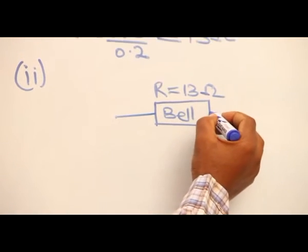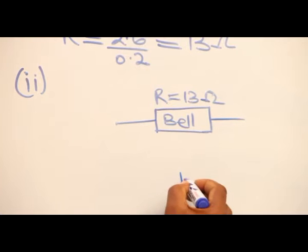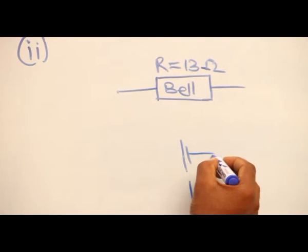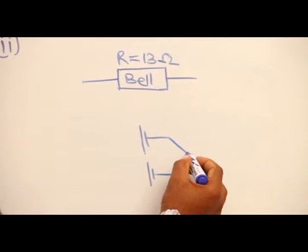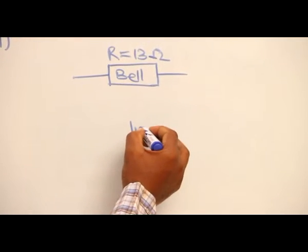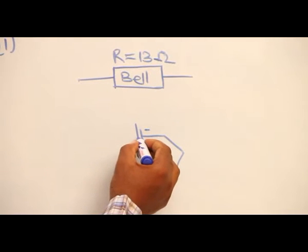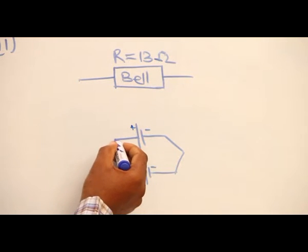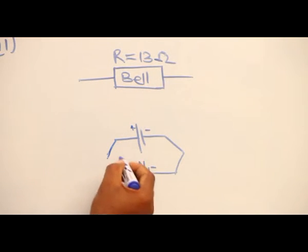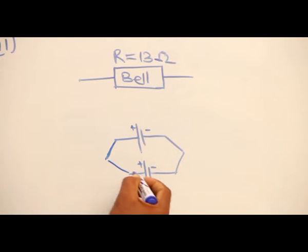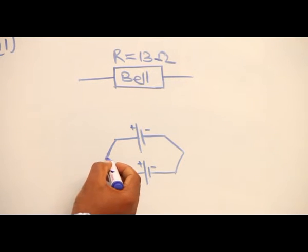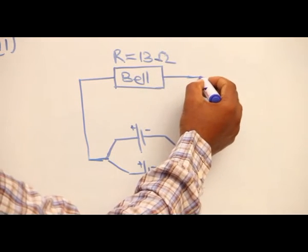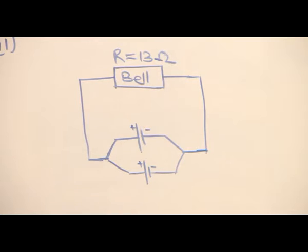The bell is now connected to the cells when they are connected in parallel to form battery. So we have this arrangement of the cells joined together. Negative terminals joined together. Positive terminals joined together. The cells are now connected in parallel. So this cell is now linked to the bell.